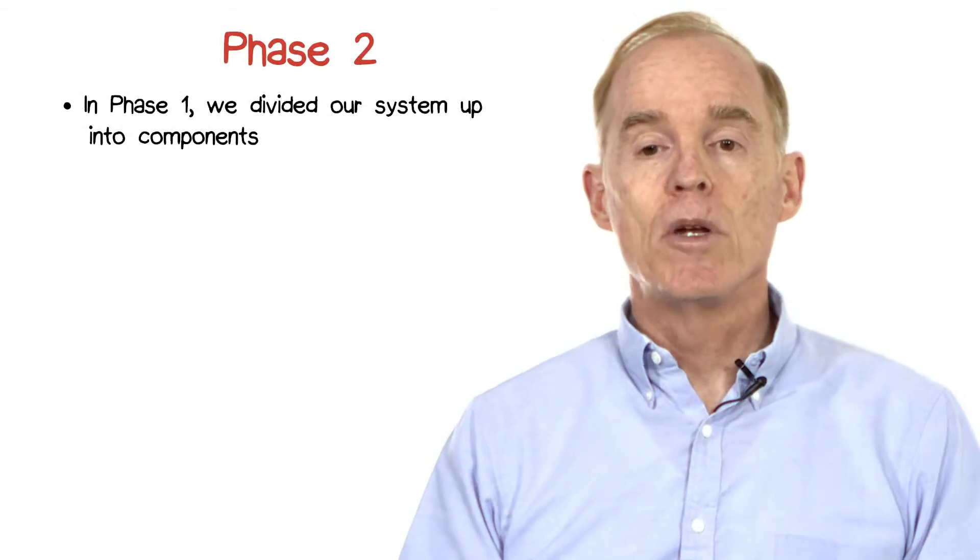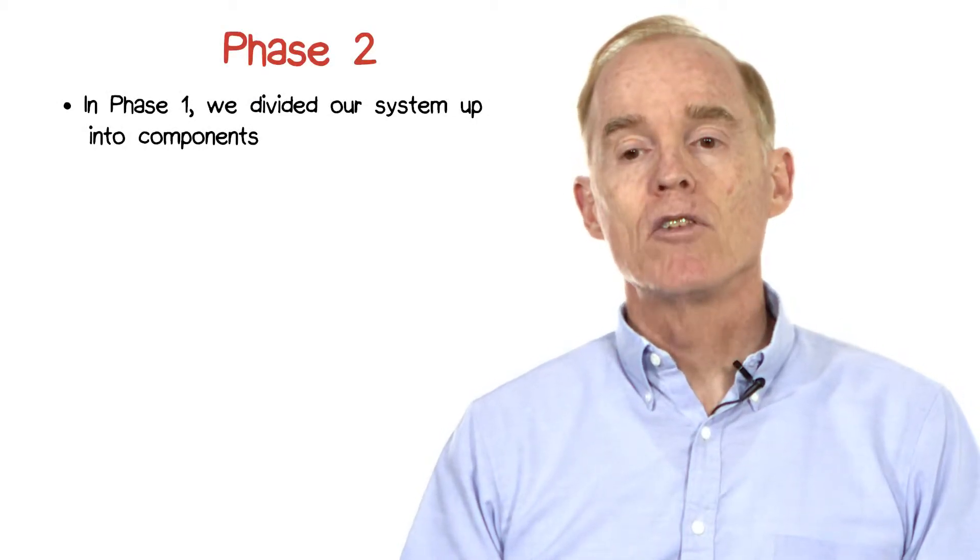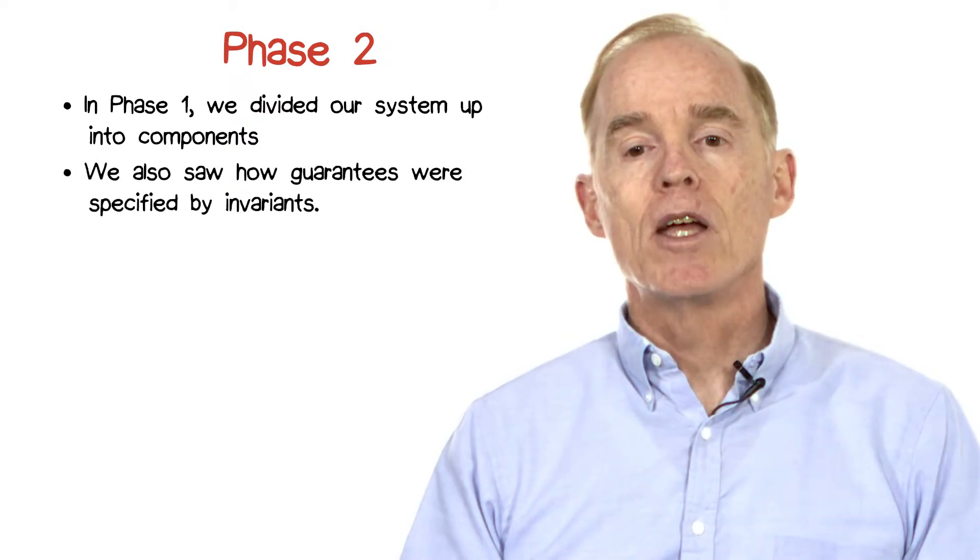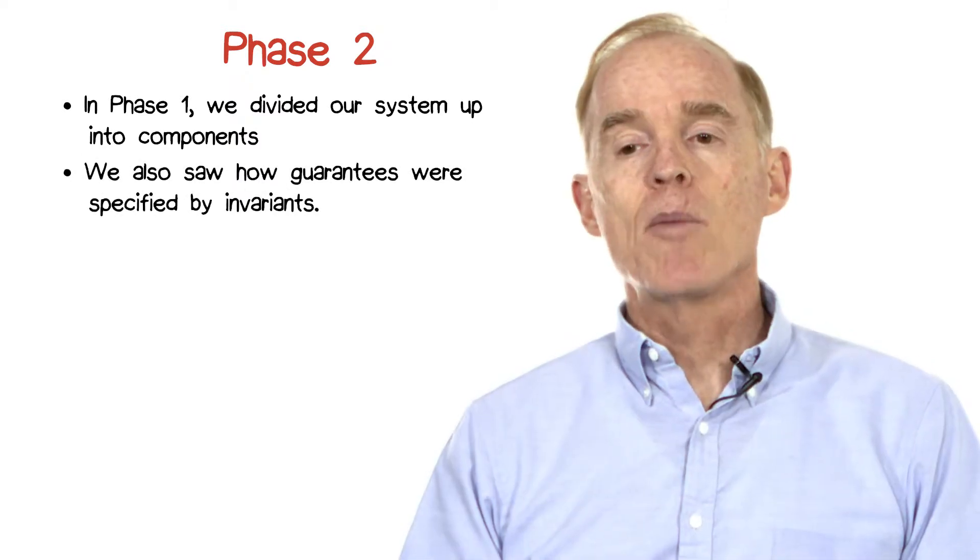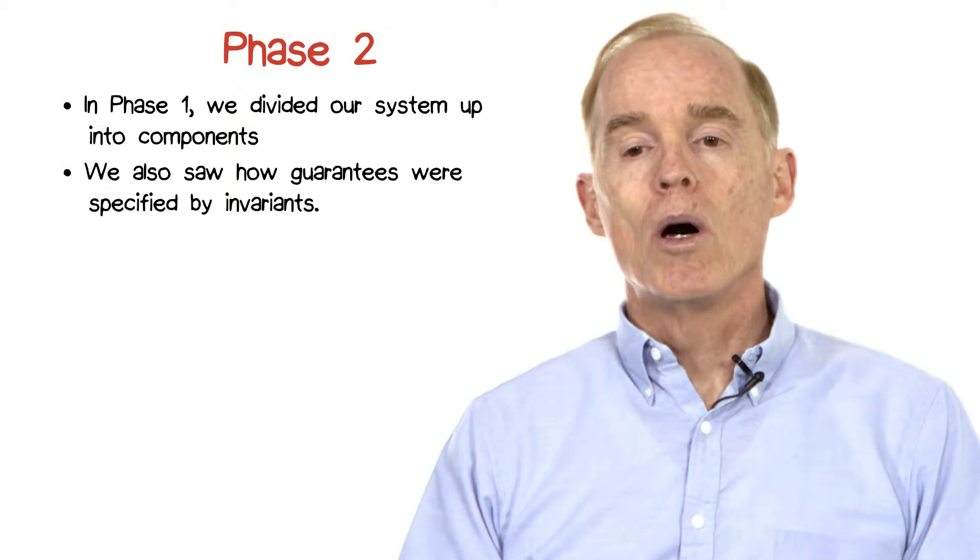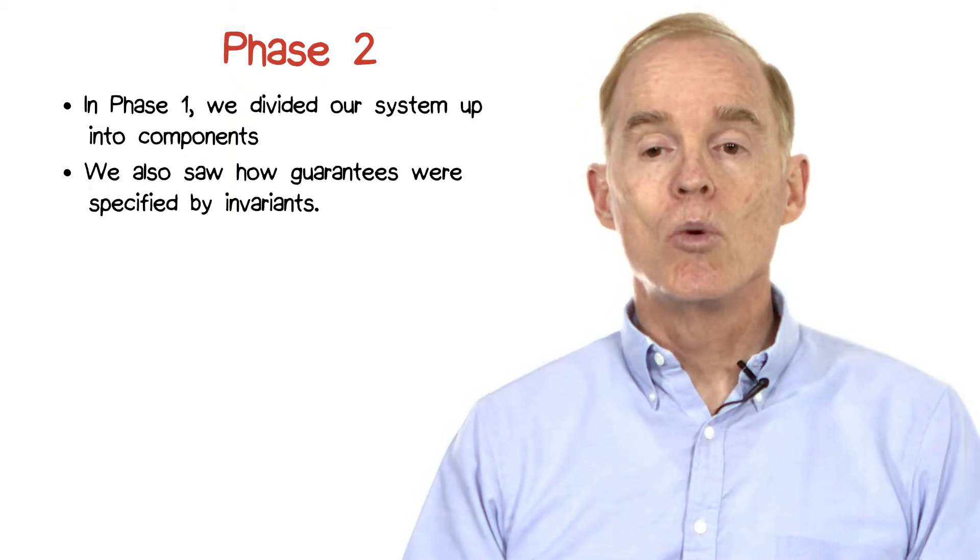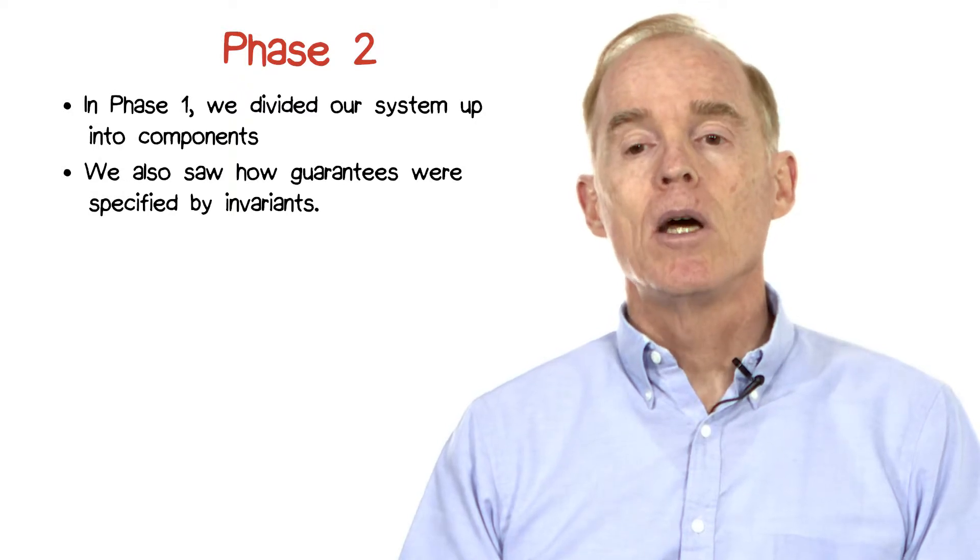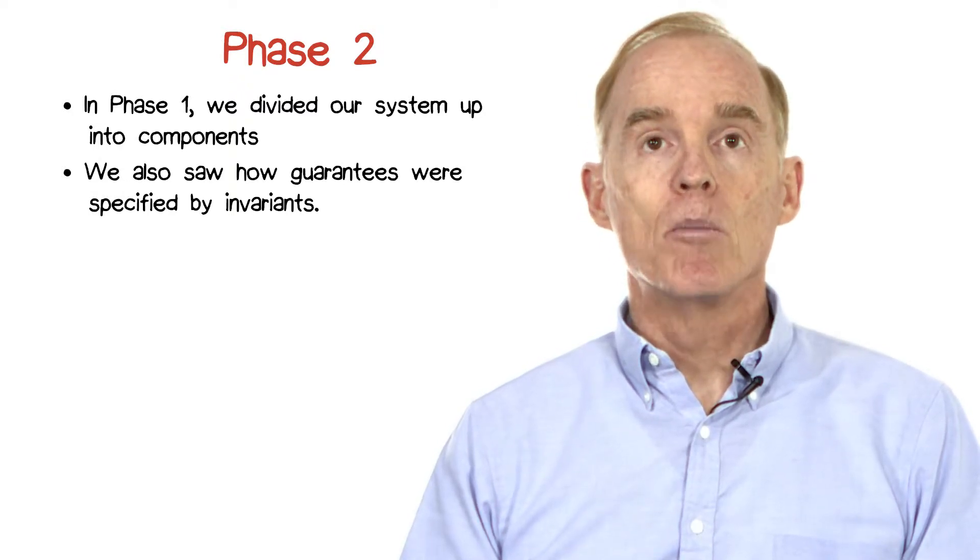In phase one, we divided our system up into components responsible for handling events and providing percepts. We also saw how guarantees were specified by invariants. Note that although the example invariants we saw were attached to associations, other invariants might be directly provided by the components themselves.